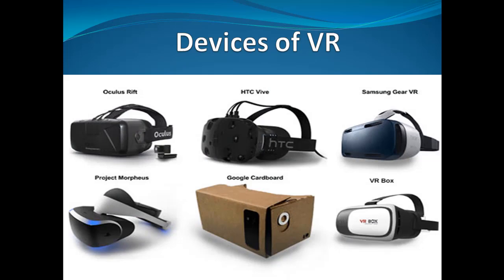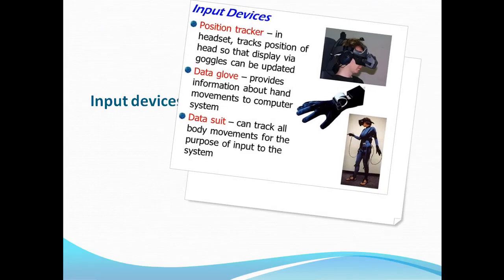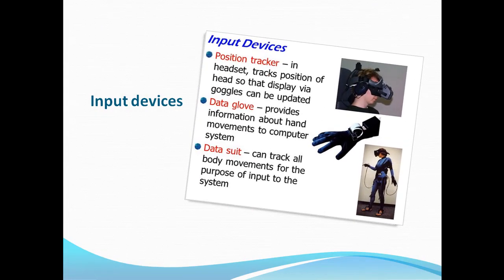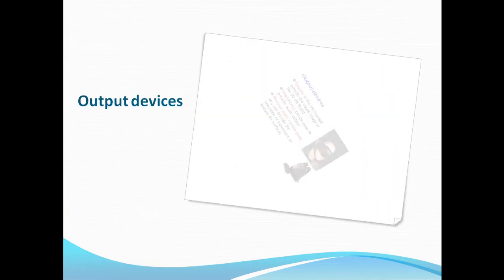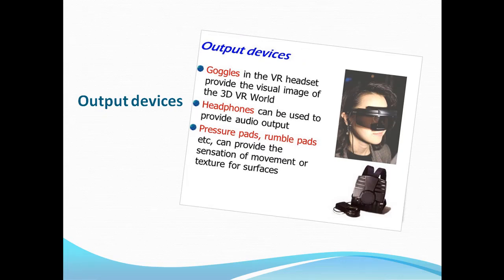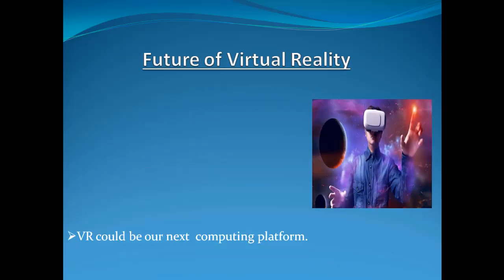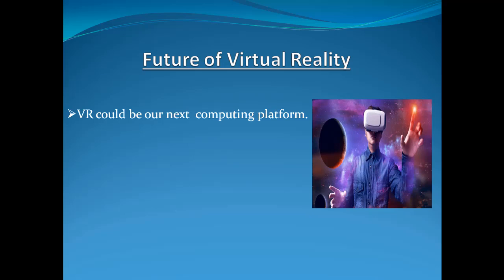Devices of virtual reality: many devices are used to make a virtual environment, such as Google Cardboard, VR boxes, Samsung Gear VR, HTC Vive, and Oculus Rift. Some input devices include position trackers, data gloves, and data suits. Some of the output devices include goggles, headphones, pressure pads, and rumble pads.